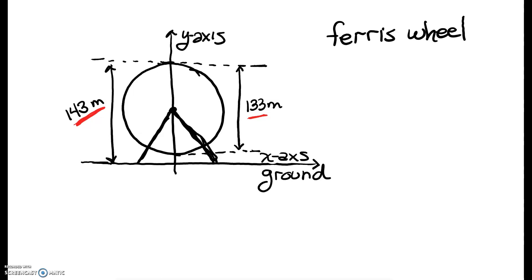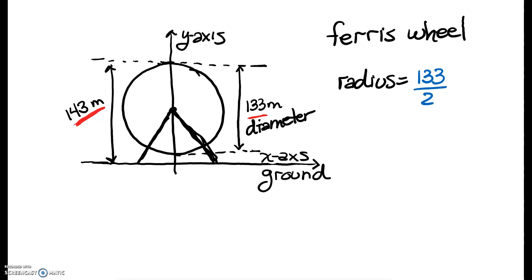So how can we find the radius of this ferris wheel? Well, we have the diameter. From the top to the bottom of the ferris wheel is 133 meters, so the radius is going to be half of that — we only want the distance from the center to the edge, this blue part. So the radius is going to be 66.5 meters.